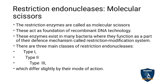Restriction endonucleases are called molecular scissors because they cut the molecules of the DNA — nitrogen bases, nucleotides. Hence they are known as molecular scissors. These act as a foundation for recombinant DNA technology because after cutting the DNA at a specific site, another gene of interest can be joined. So this enzyme is the basic tool for rDNA technology.